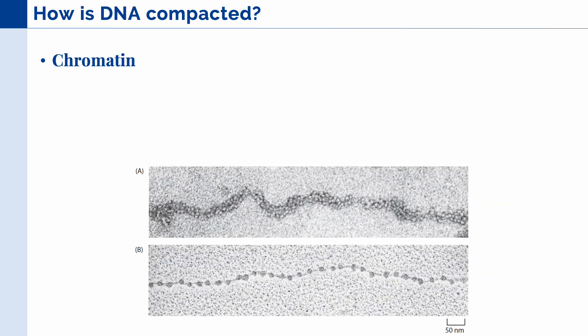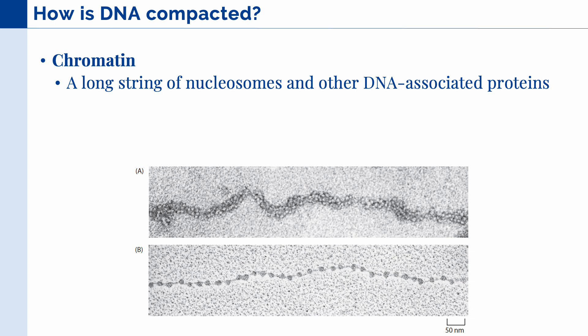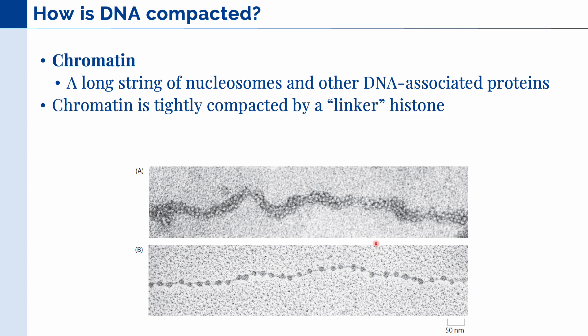The next level of DNA compartmentalization is called chromatin, and this is composed of a long string of nucleosomes and other DNA-associated proteins. In this figure, we can see the chromatin here on top. And if we stretch out this chromatin, we can actually see the individual nucleosome core particles and their linking DNA. Now, the chromatin is tightly compacted by another histone, which we call a linker histone. This is histone H1.